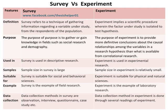The purpose of survey is to gather or gain knowledge in fields such as social research and demography. Whereas, the purpose of experiment is to provide more definitive conclusions about the causal relationships among the variables in a research hypothesis than what is available from correlational research.